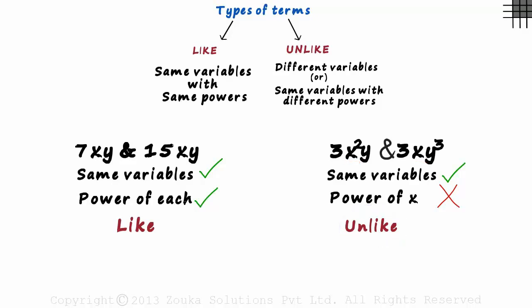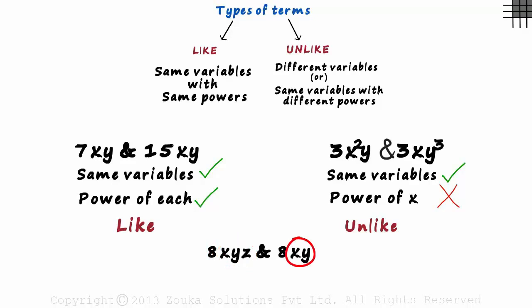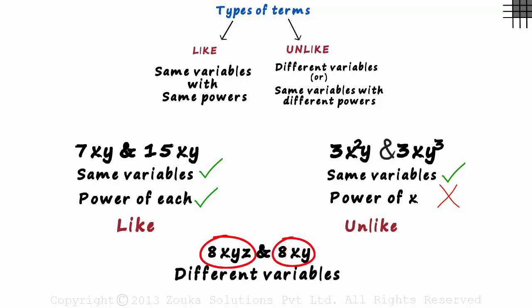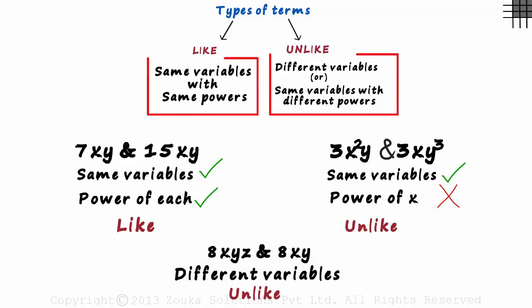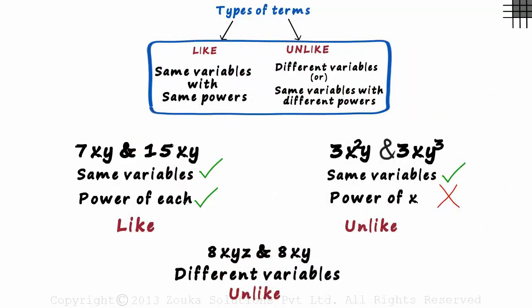What about 8xyz and 8xy? The first term has 3 variables: x, y and z. The second term has just x and y — it does not have z. Both the terms have different variables, hence they are unlike. Just remember these two things and you would have no problem understanding the types of terms.